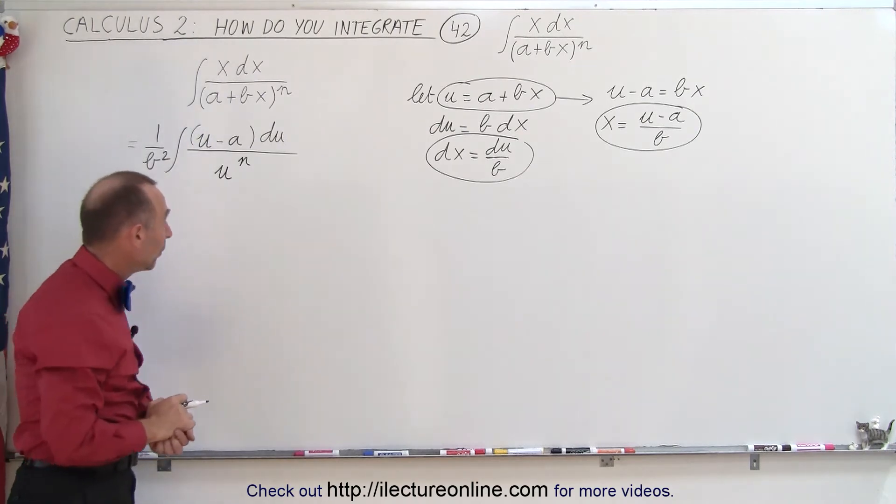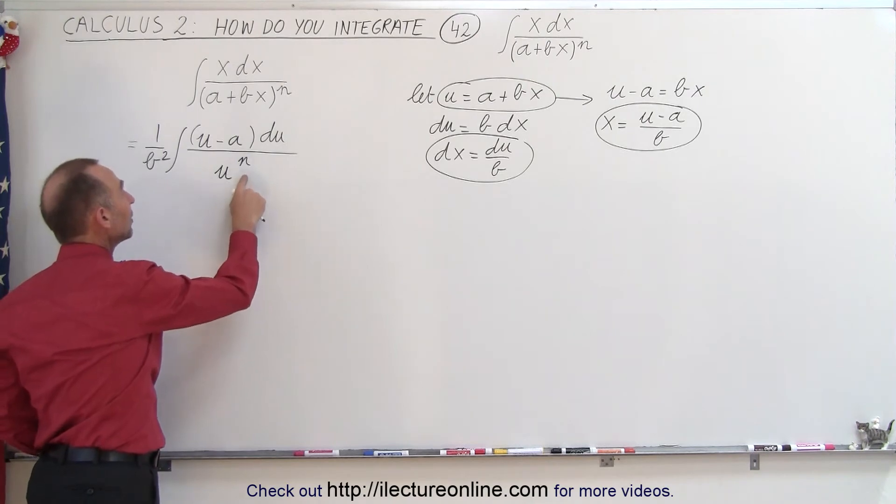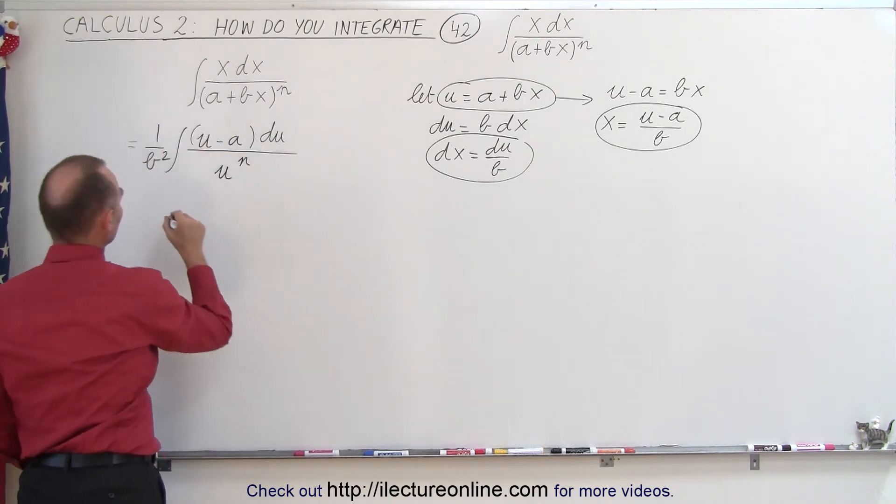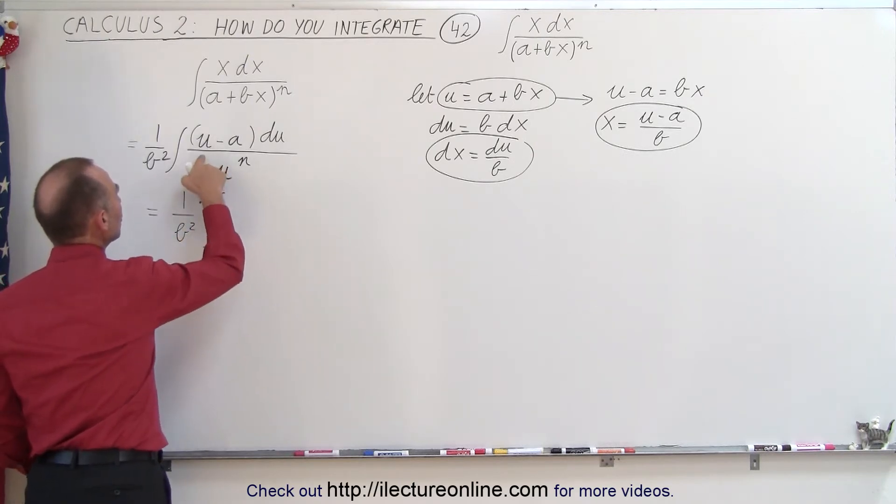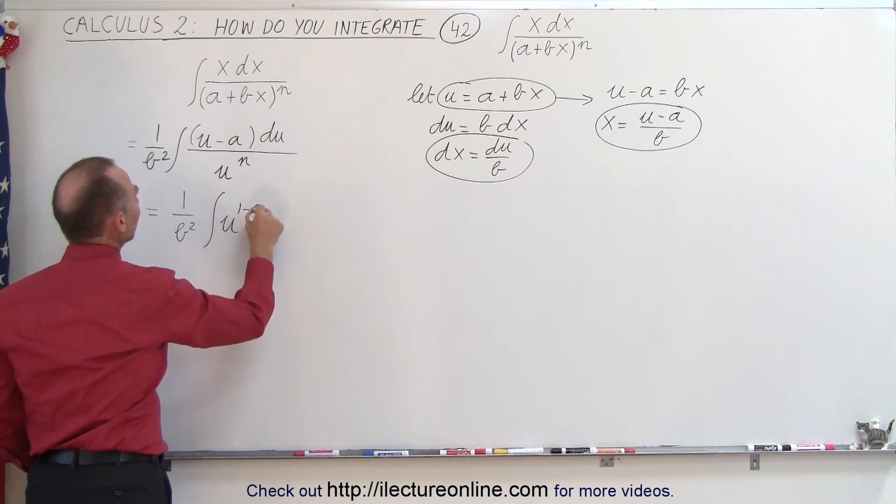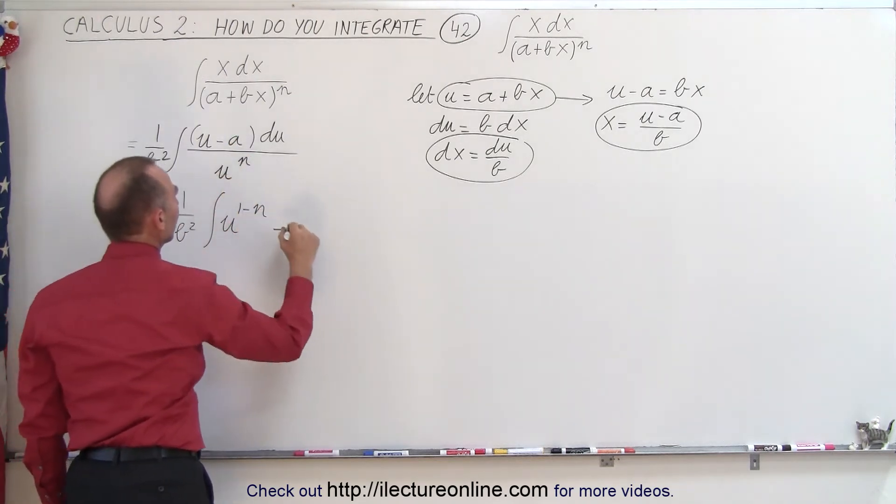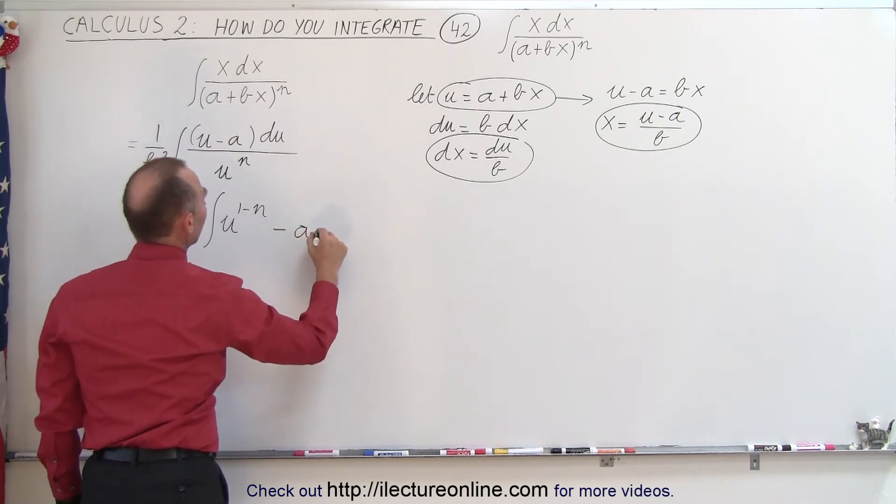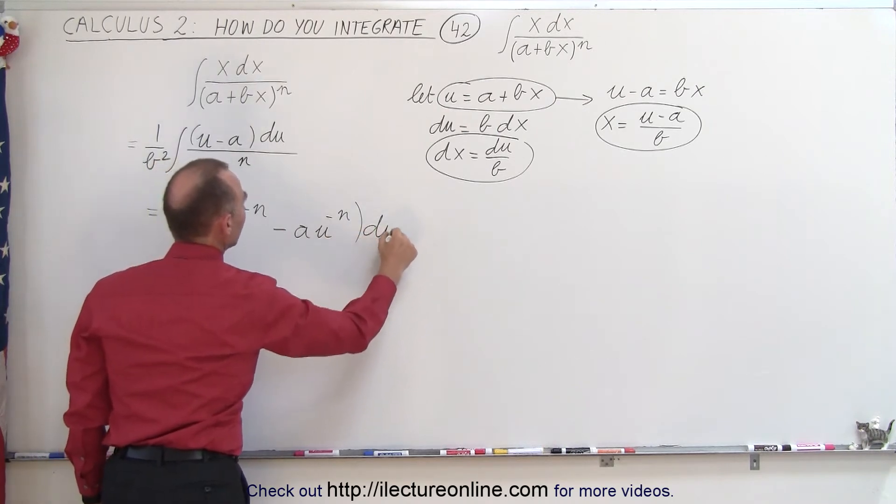Now you may say, where do we go from here? Well, we can divide the denominator into the numerator, which will give us the following. This is equal to 1 over b squared times the integral of u divided by u to the n, which is u to the 1 minus n, minus a divided by this becomes a times u to the minus n, the whole thing times du.